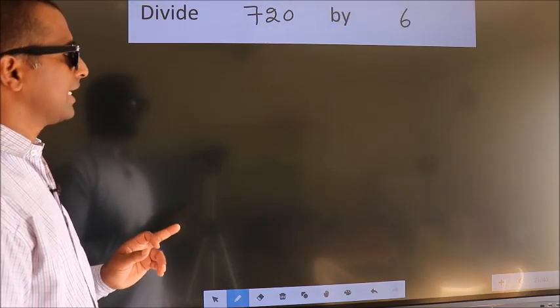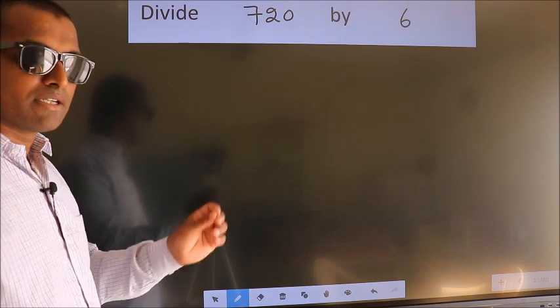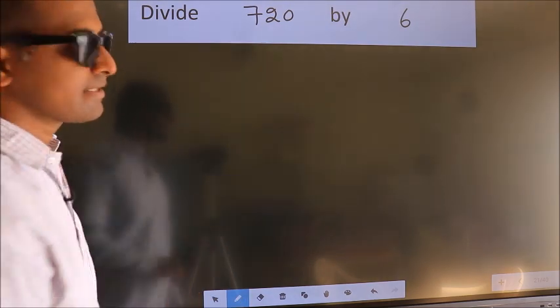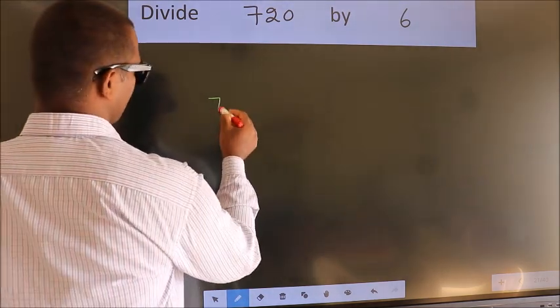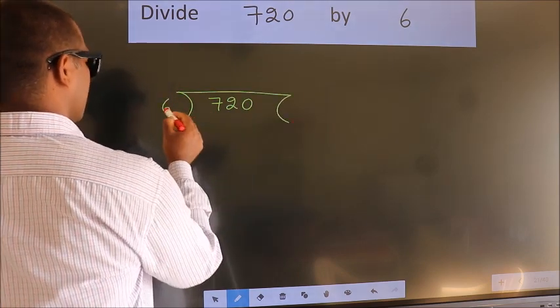Divide 720 by 6. To do this division, we should frame it in this way: 720 here, 6 here.